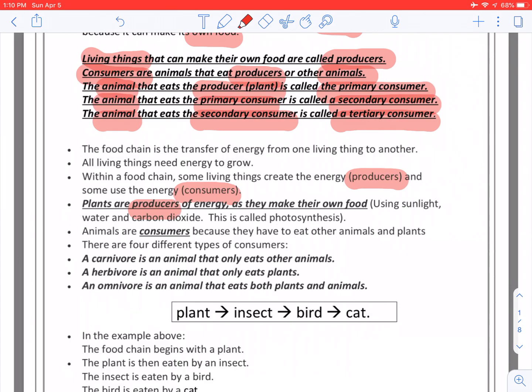Plants are the producers of energy as they make their own food using sunlight, water, and carbon dioxide. This process is called photosynthesis. Animals are consumers because they have to eat other animals and plants.